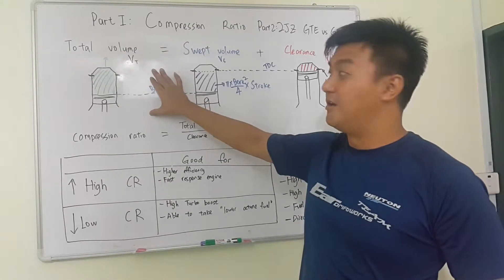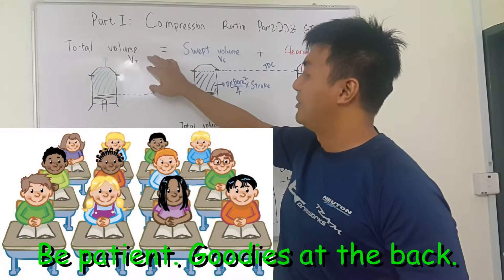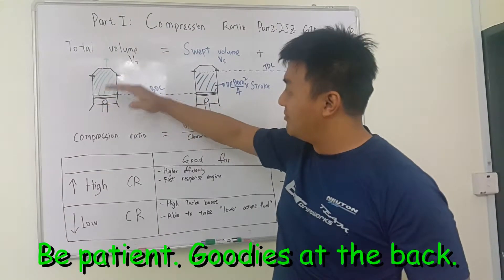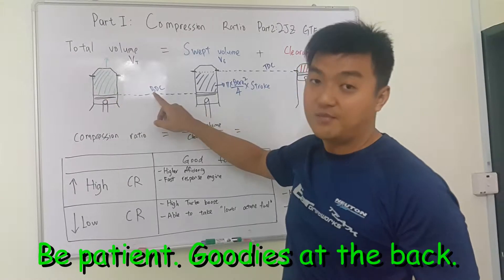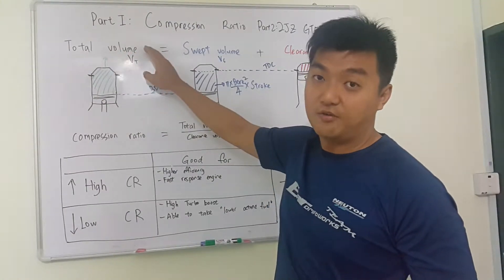First of all, we need to understand a few terms which is total volume. The total volume is when the piston travels to the most bottom, we call it bottom dead center. Then this whole volume, we call it the total volume.